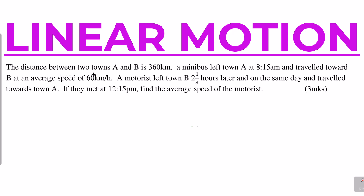The distance between two towns A and B is 360 kilometers. A minibus left town A at 8:15 am and traveled towards B at an average speed of 60 kilometers per hour. A motorist left B two and a third hours later, on the same day, and traveled towards A. If they met at 12:15 pm, find the average speed of the motorist.